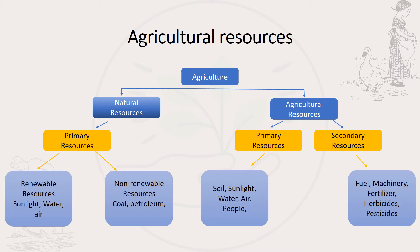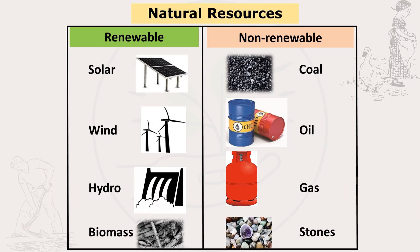When it comes to agricultural resources, these can also be grouped into primary resources as well as secondary resources. As mentioned, natural resources are grouped into two: renewable resources and non-renewable resources.